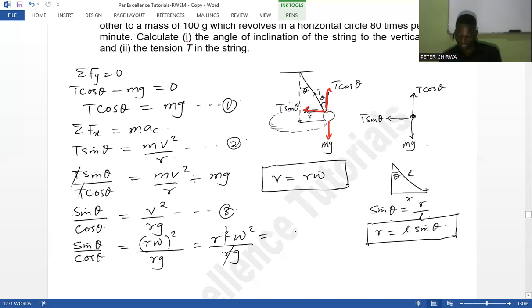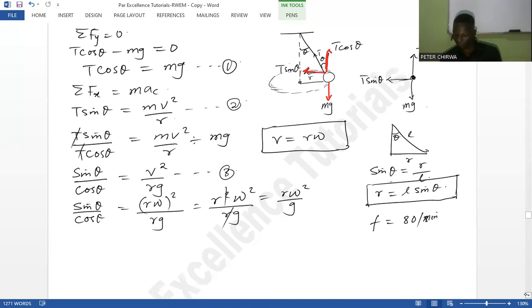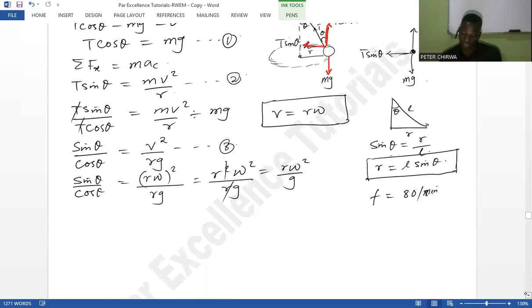So here we have R omega squared over G. And remember in the question that the mass is 100 grams and it's revolving at 80 times per minute. So what's that? 80 times per minute, that is frequency that we have. So the frequency there is 80 per minute. So we have to convert that one as well to standard, which is per second.